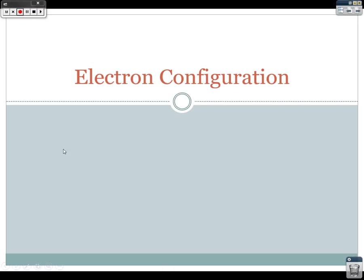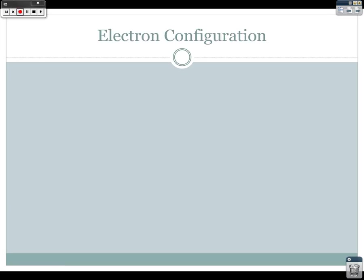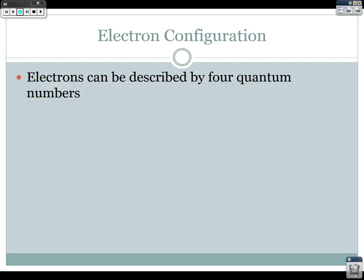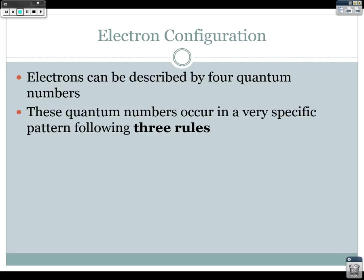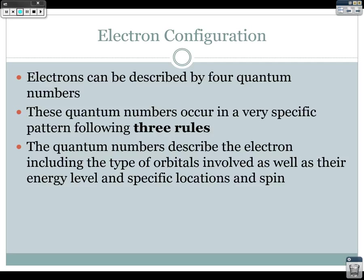Good evening. Today we're going to be talking about electron configuration. Electrons can be described by four different quantum numbers, and these numbers describe different aspects of the electron. They occur in very specific patterns following three different rules. The quantum numbers describe the energy level, the type of orbitals involved, the specific location, and the spin.